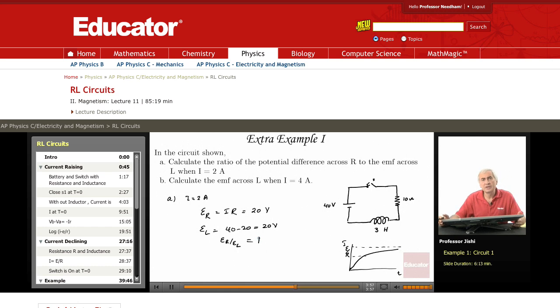So at that instant, we have equal potential difference across both of them. What is EMF across L when I is 4 amperes? I is 4 amperes, that's the maximum current. When I is 4 amperes, then what is ER?